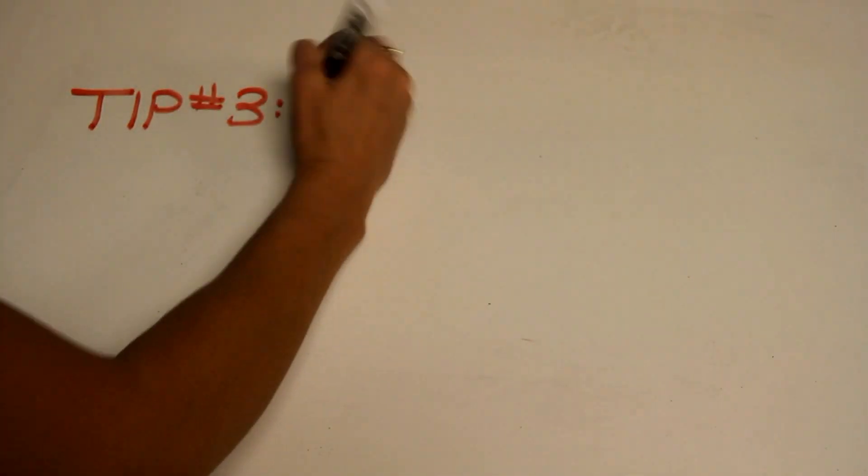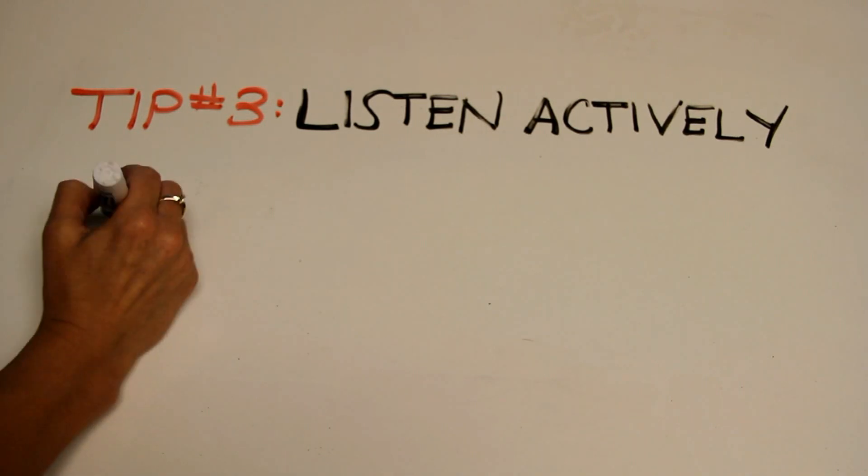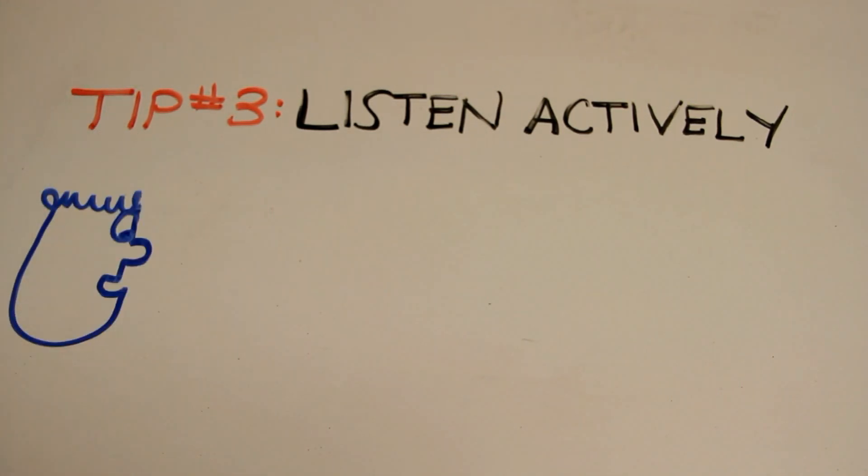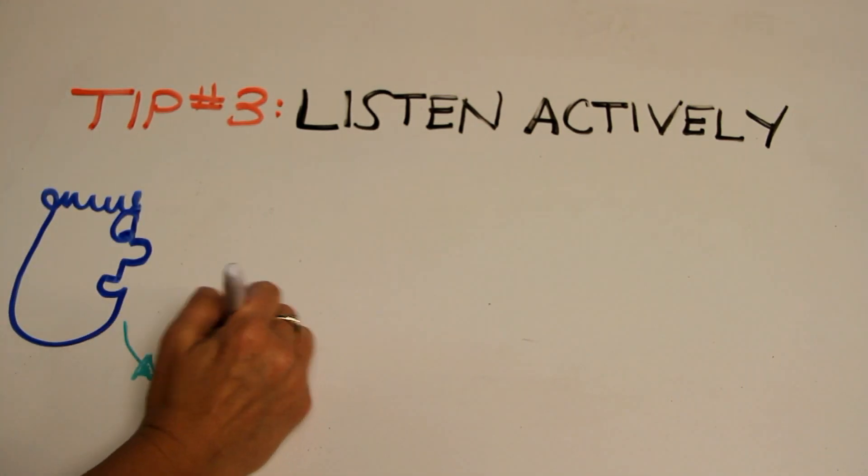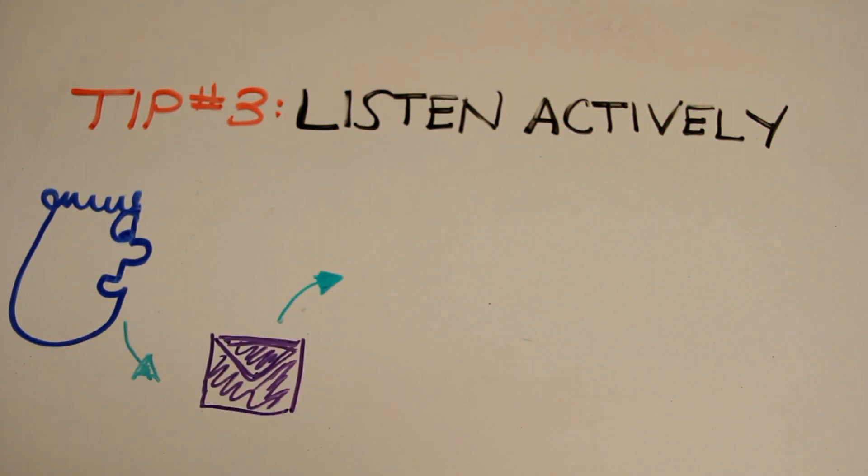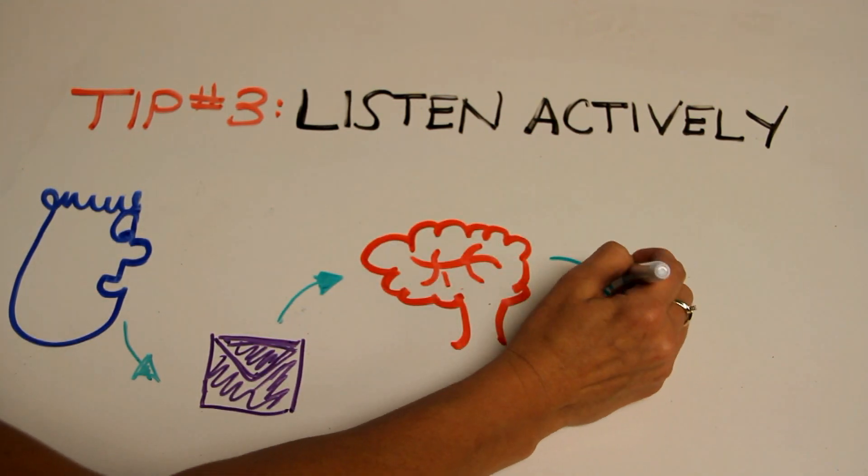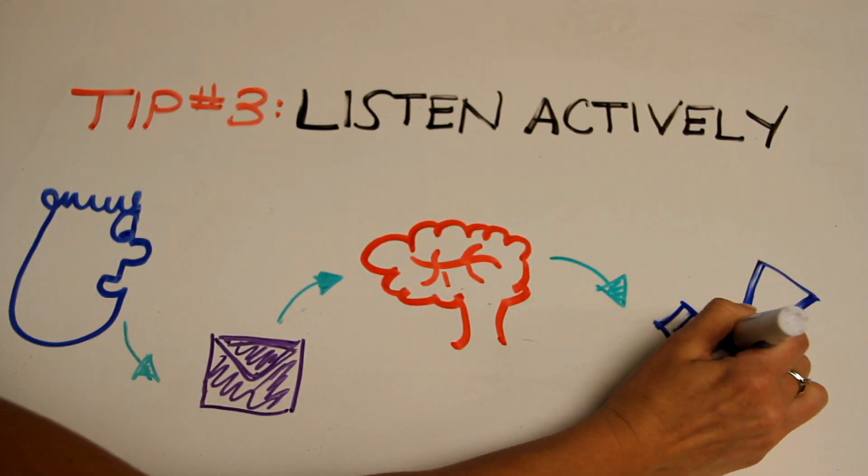Tip number three: listen actively. Active listening involves consciously hearing beyond just the words spoken. It's mindfully paying attention to the complete message being sent. Ask follow-up questions if you're uncertain and try to repeat their message back to them to confirm you understand.